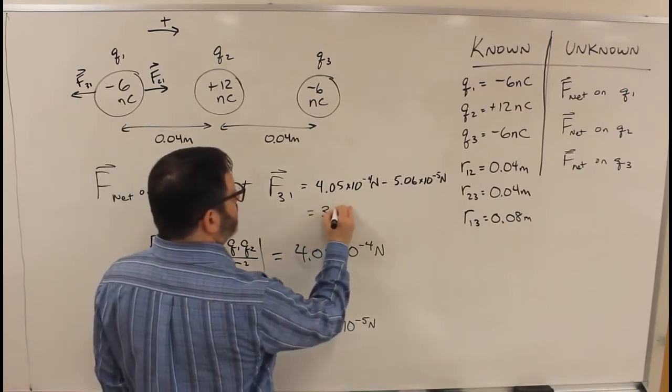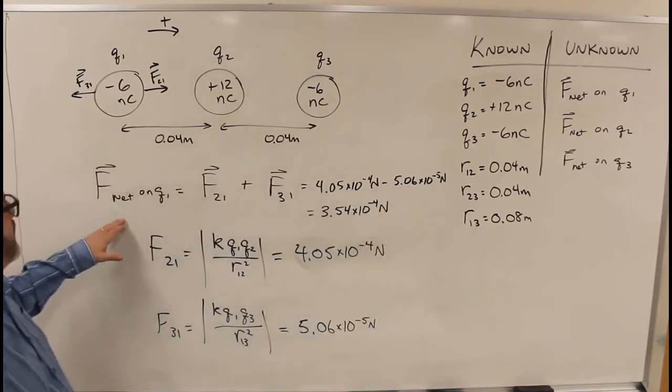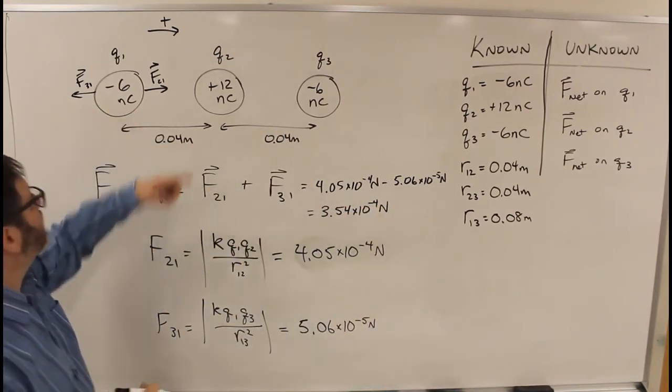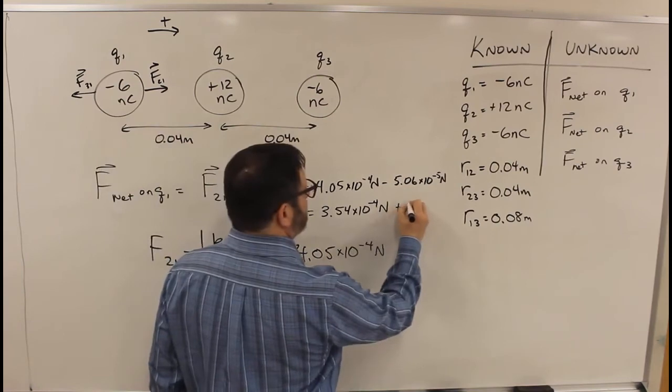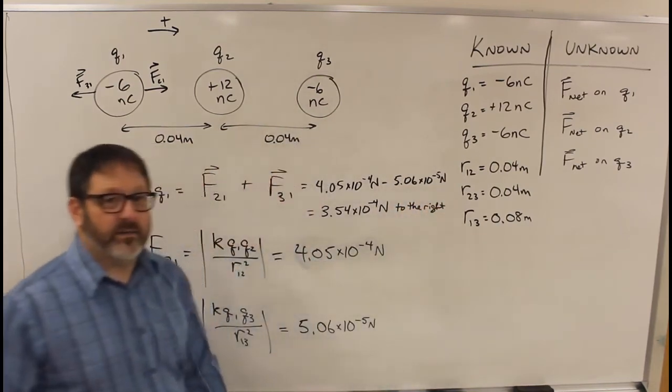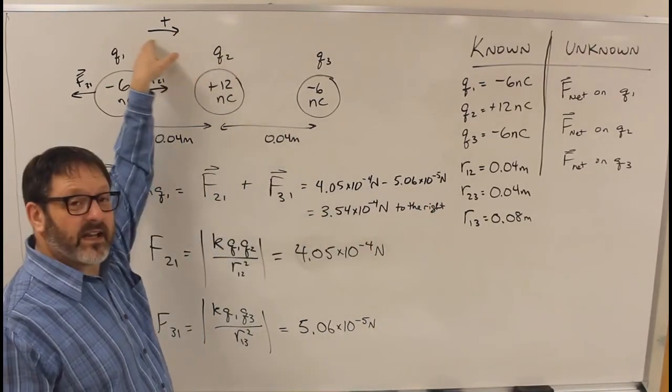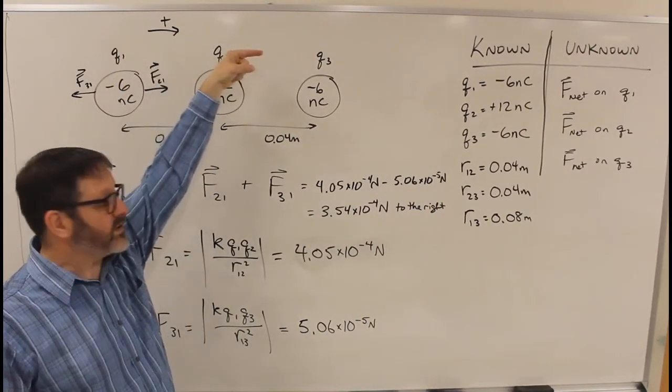So this is 3.54 times 10 to the minus 4 newtons in the positive direction, so to the right. You could just leave this as a positive number, because in this case I've indicated plus is that direction.